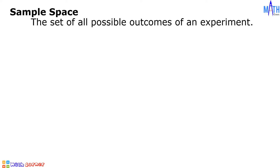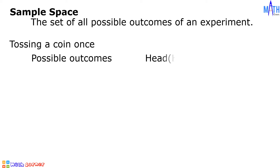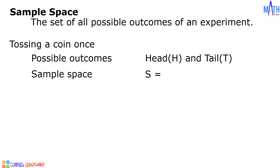The set of all possible outcomes of an experiment is called sample space. For instance, in an experiment of tossing a coin, the two possible outcomes are head and tail. The sample space is set S, consisting of the elements head and tail.